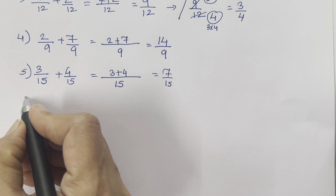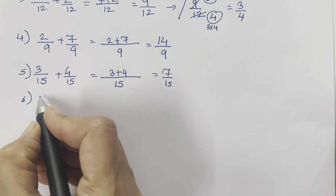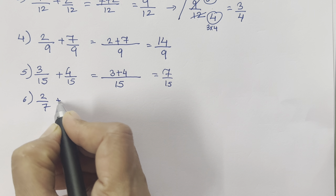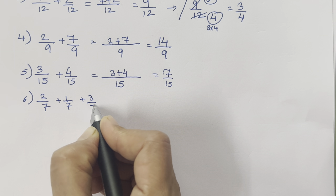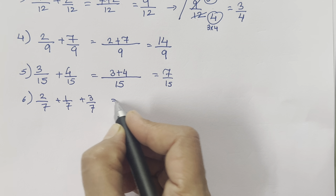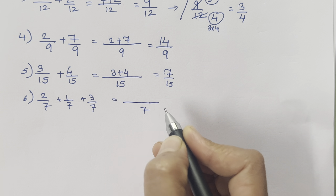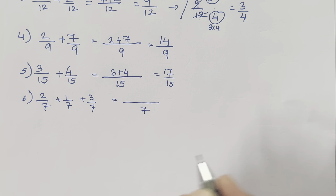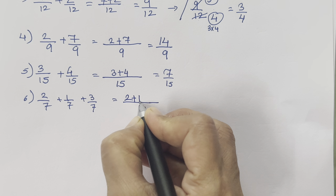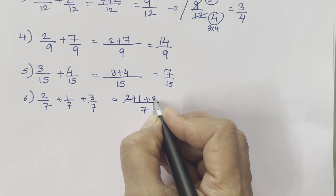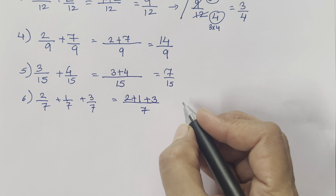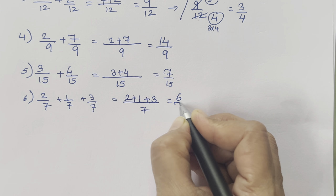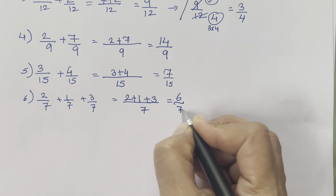Now the sixth one is 2 upon 7 plus 1 upon 7 plus 3 upon 7 plus 3 upon 7. All the numbers at the denominator are the same — that is 7. So 2 plus 1 plus 3 plus 3: 2 plus 1 is 3, and 3 plus 3 is 6, giving us 6 upon 7.